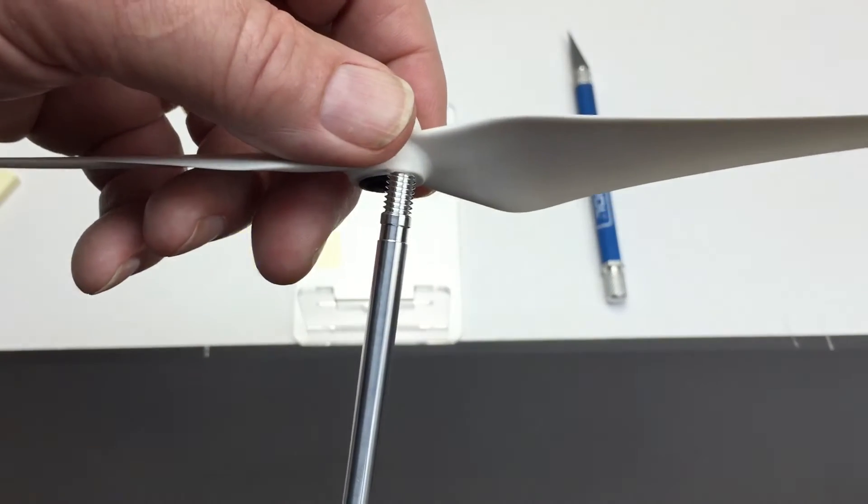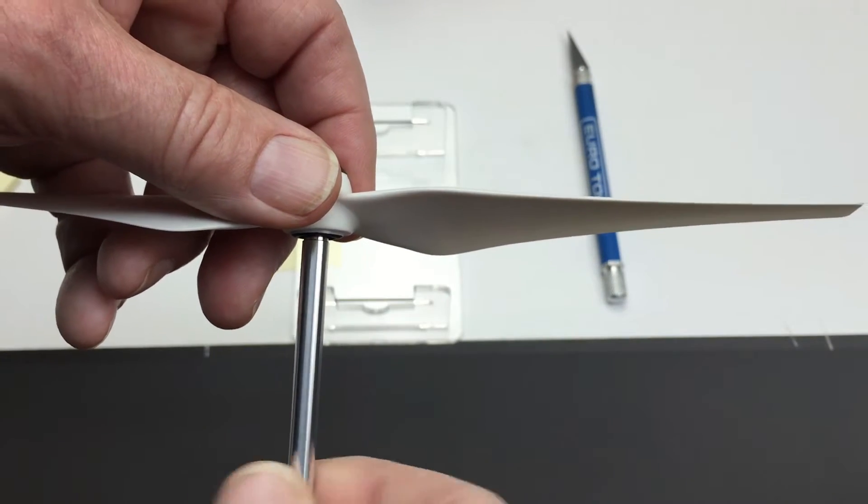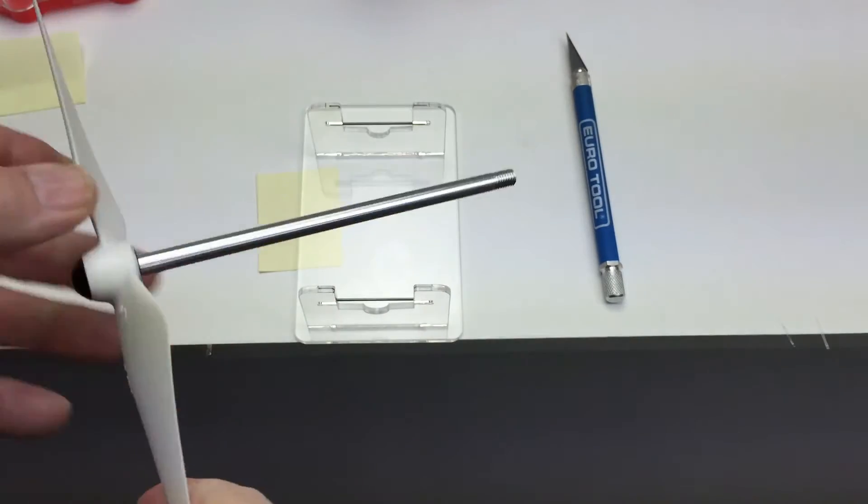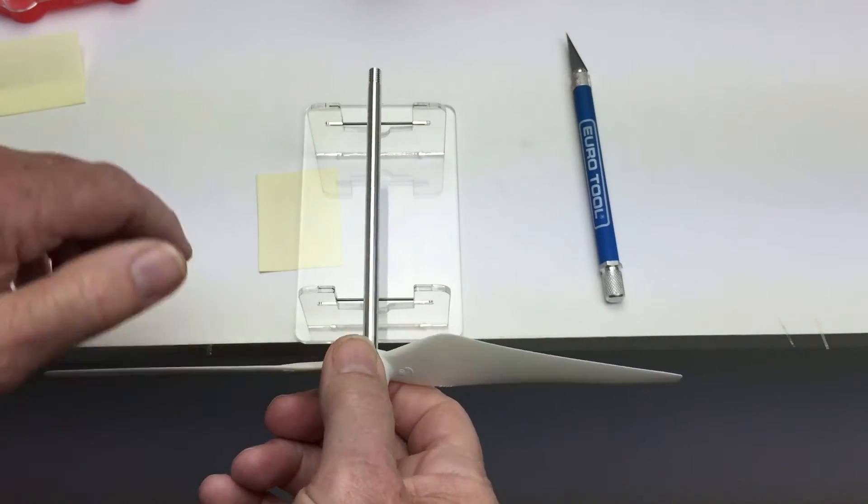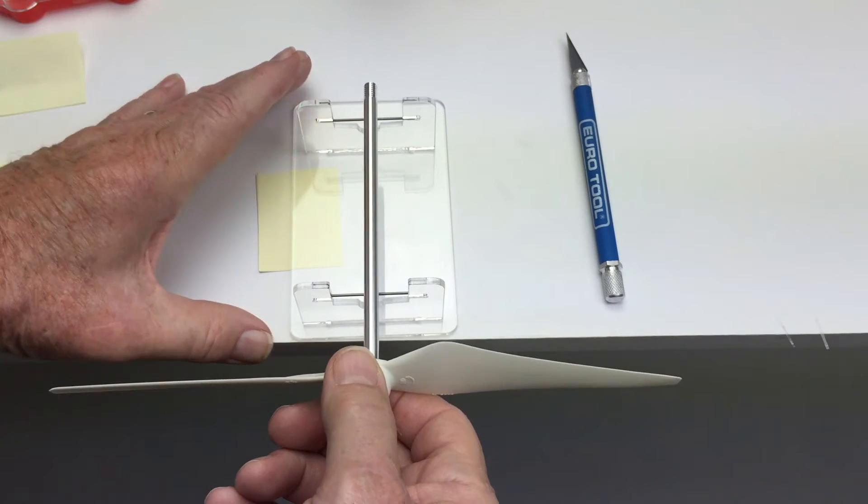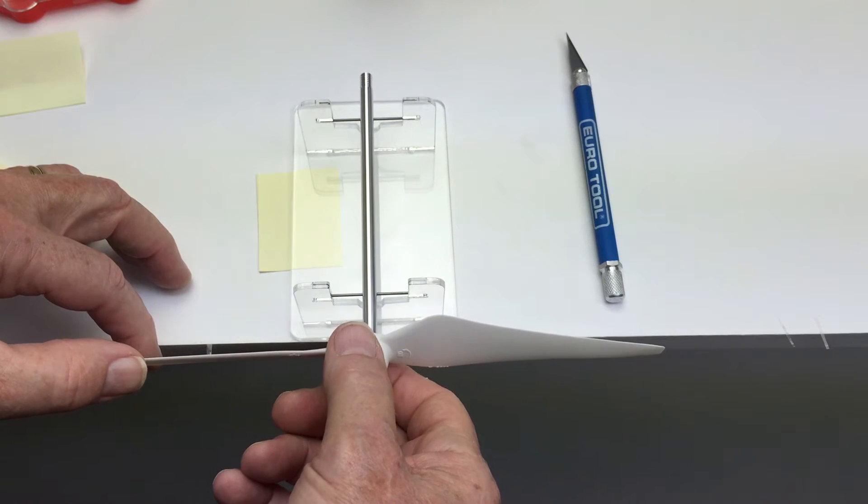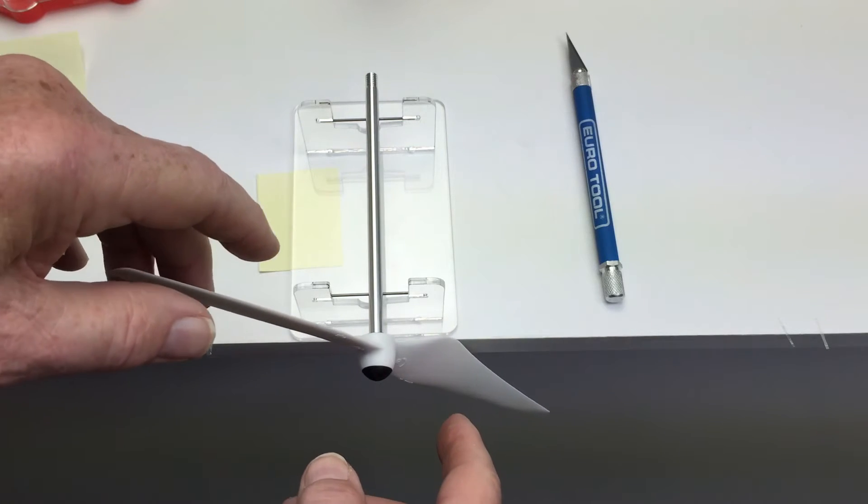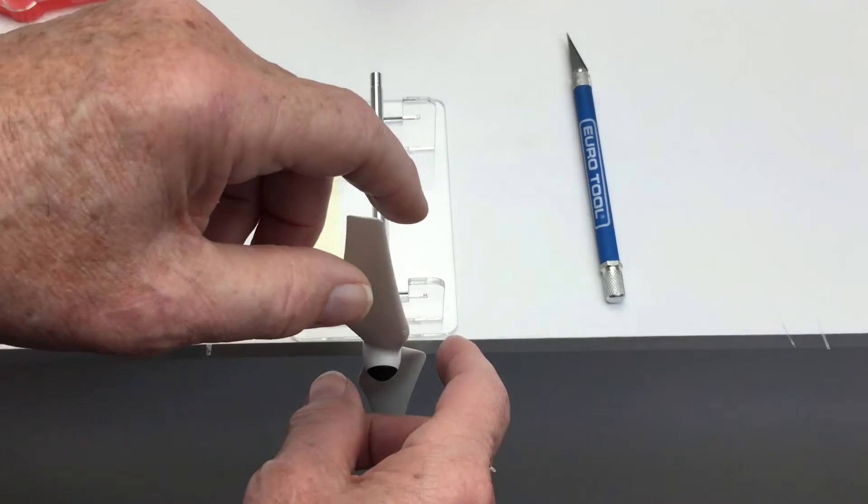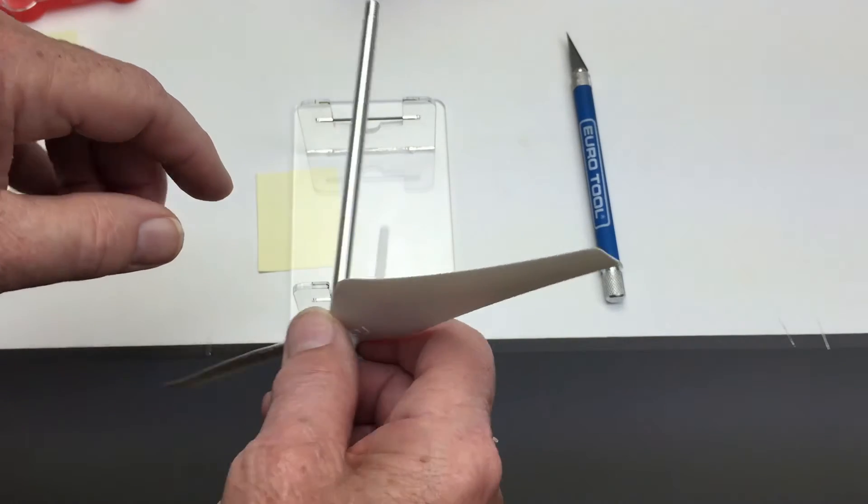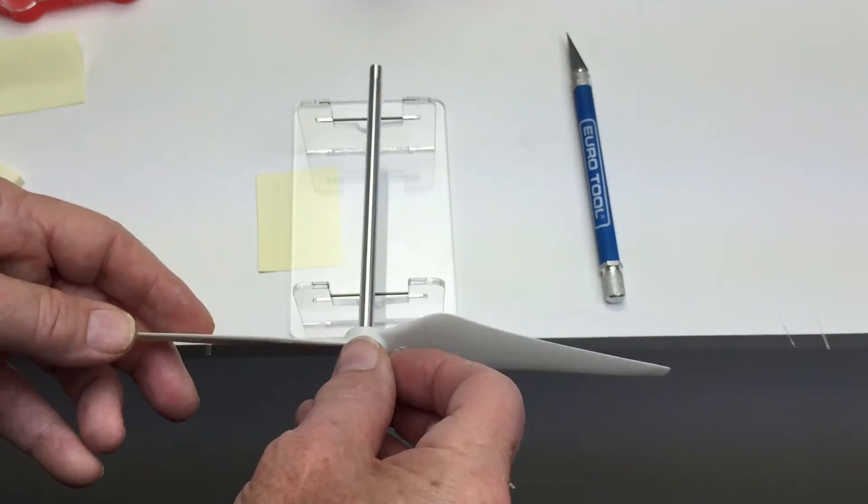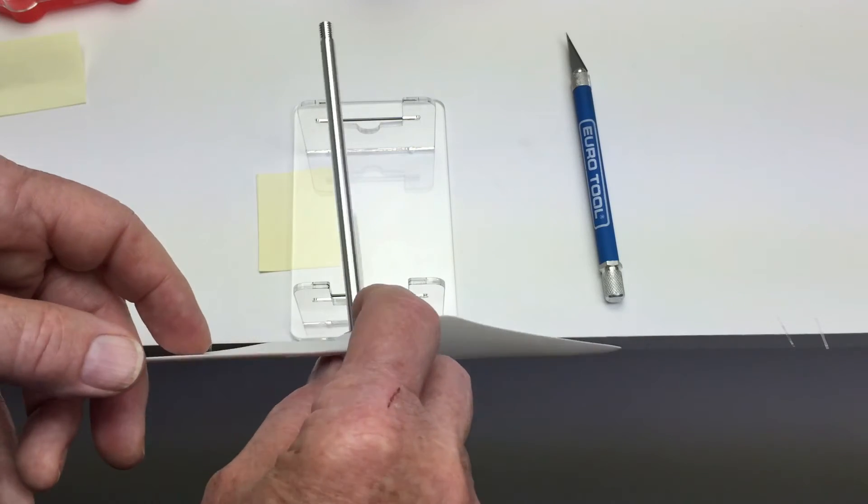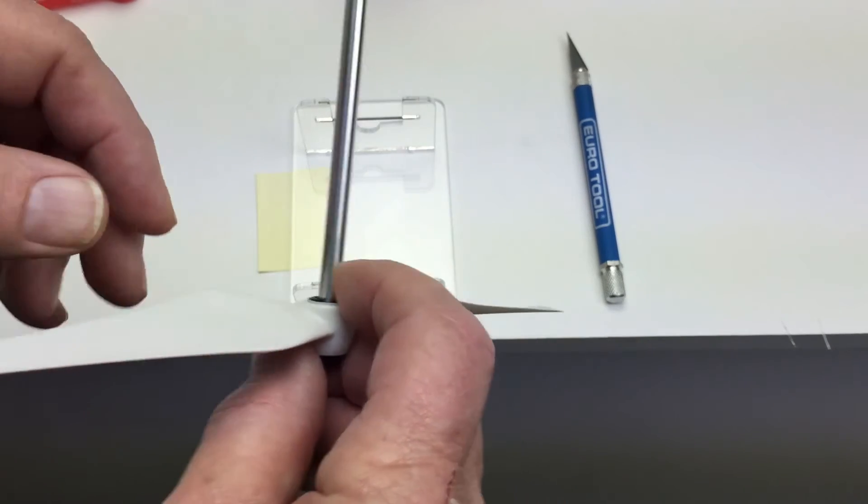Next thing you do is reassemble the rod, put it in the balancer, and we're looking for which side is the heavy side. We're going to put tape on the other end. This is obviously going to be the heavy side and it's going fairly slow, so we know this side needs some tape but not much. This is the light side.